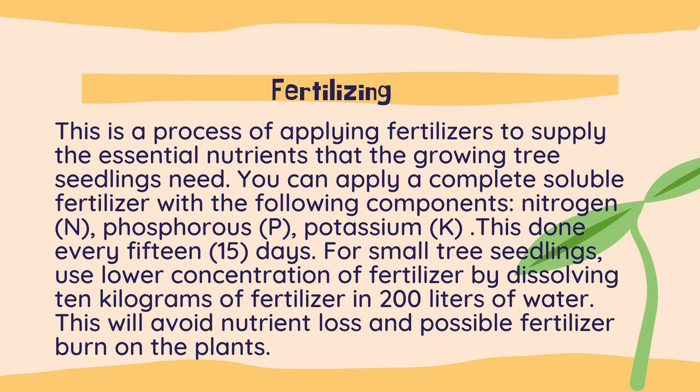Number three is fertilizing. This is the process of applying fertilizers to supply the essential nutrients that the growing tree seedlings need. You can apply a complete soluble fertilizer with the following components: nitrogen, phosphorus, and potassium. This is done every 15 days. For small tree seedlings, use a lower concentration of fertilizer by dissolving 10 kilograms of fertilizer in 200 liters of water.